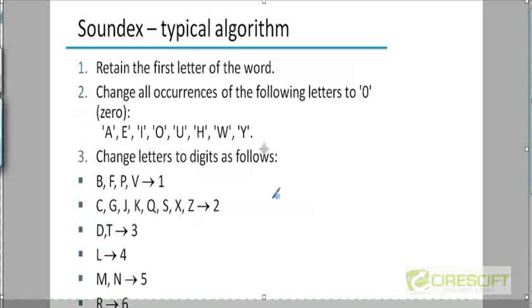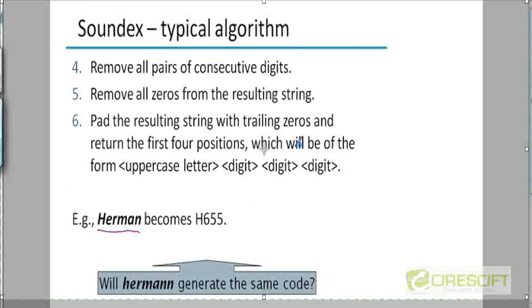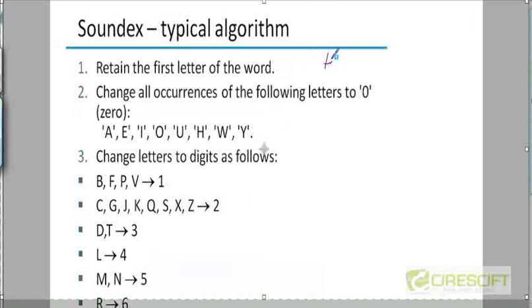Let me give you an example of how a typical Soundex algorithm works. There are actually many variants of this algorithm. This is just one simple version. Here's the heuristic. You'll take the first letter of the word. Let's take a token like Herman, which is the name of a person, H-E-R-M-A-N.